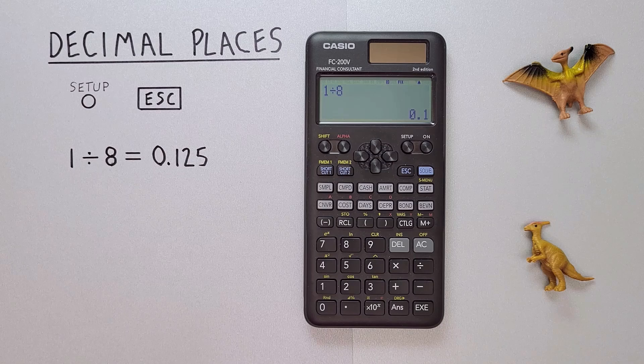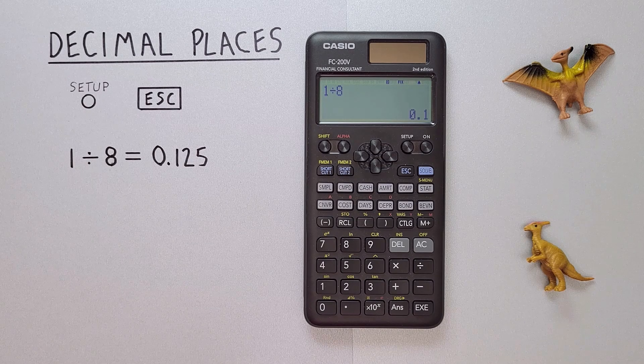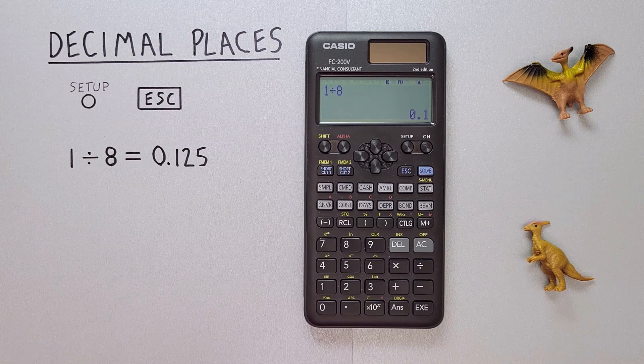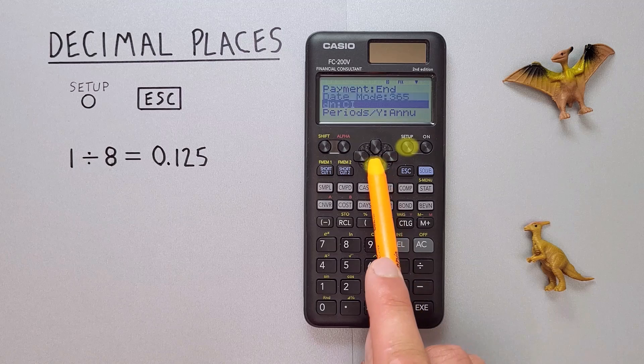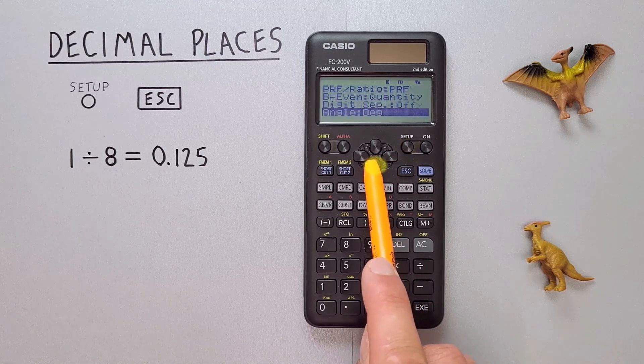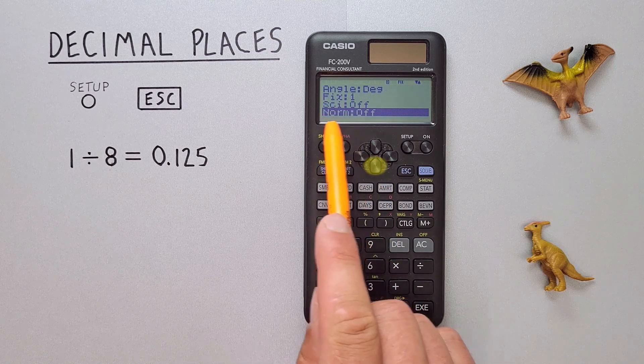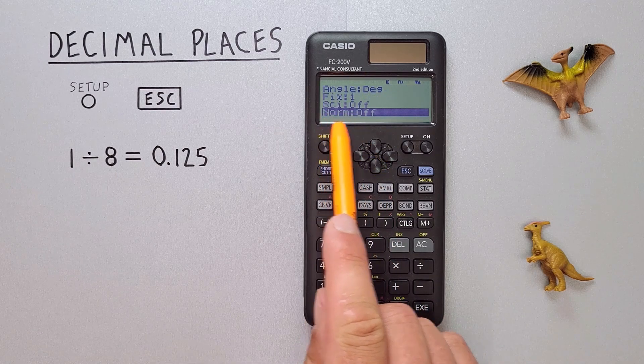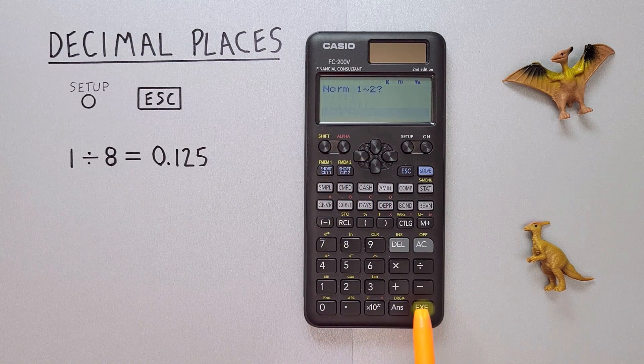What about when we're done rounding our results and want to go back to all of our decimals? To do that we need to go back to normal mode. So we go Setup, scroll down past Fix until we see Norm. It will likely say Off since we're in Fix mode, but if we select that,